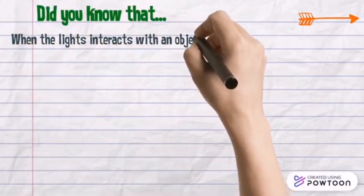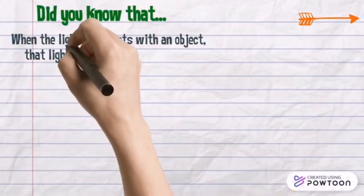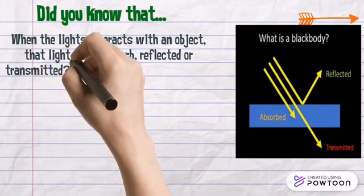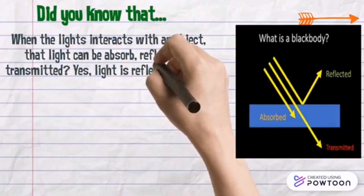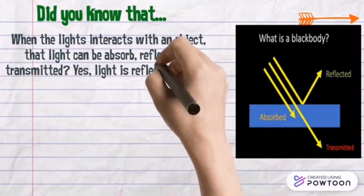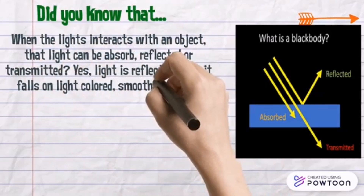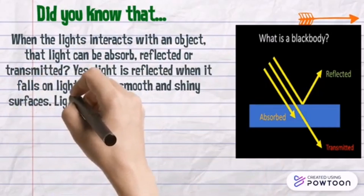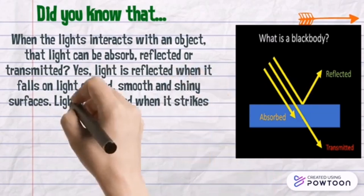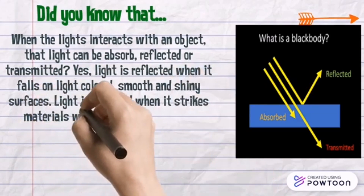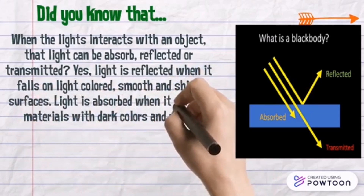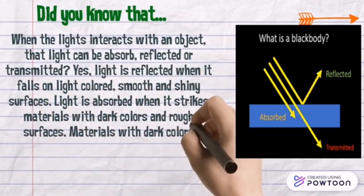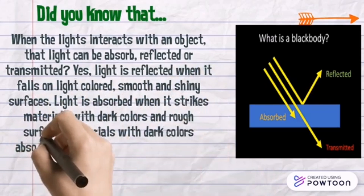Did you know that when light interacts with an object, the light can be absorbed, reflected, or transmitted? Light is reflected when it falls on light-colored, smooth, and shiny surfaces. Light is absorbed when it strikes materials with dark colors and rough surfaces.